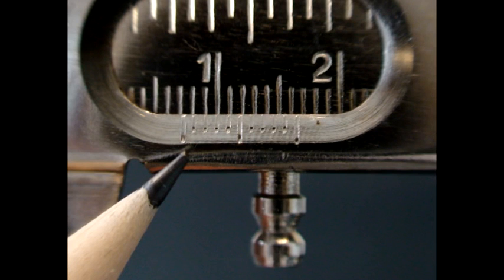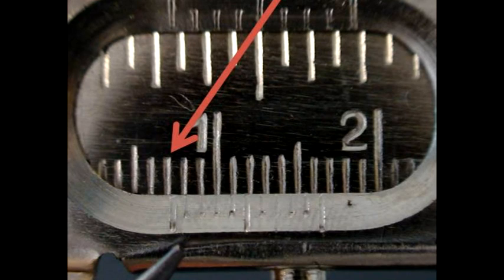First, locate the zero mark on the tenths of a millimeter scale. Next, count the number of whole number divisions that appear before this zero on the main millimeter scale. In this case, there are seven.